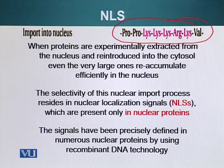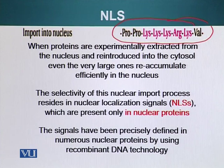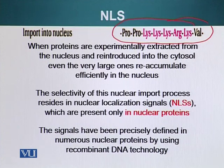When proteins are experimentally extracted from the nucleus and reintroduced into the cytosol — which can be done by microinjection — even the very large ones reaccumulate into the nucleus very efficiently. So there has to be a mechanism, a signal that is recognized by cellular machinery, responsible for selectively importing those proteins into the nucleus.